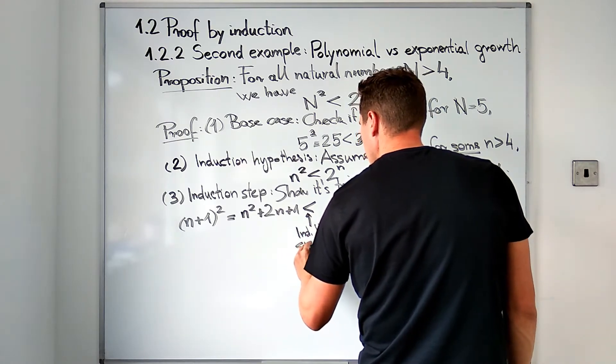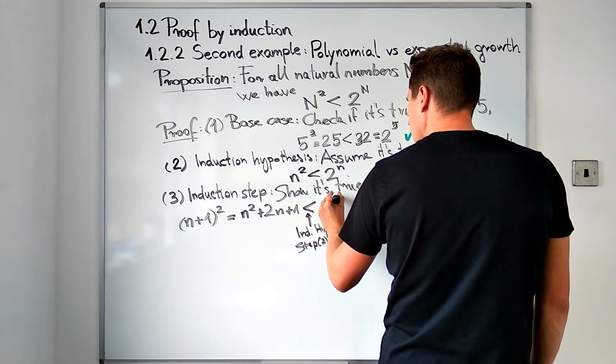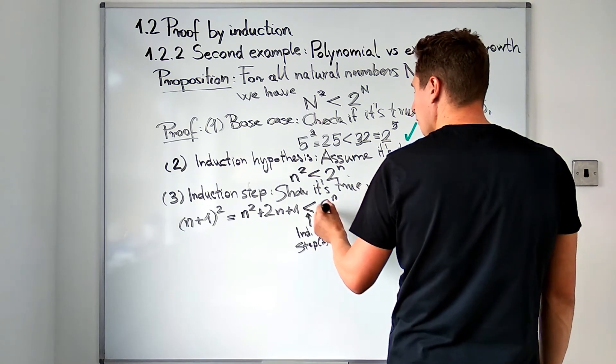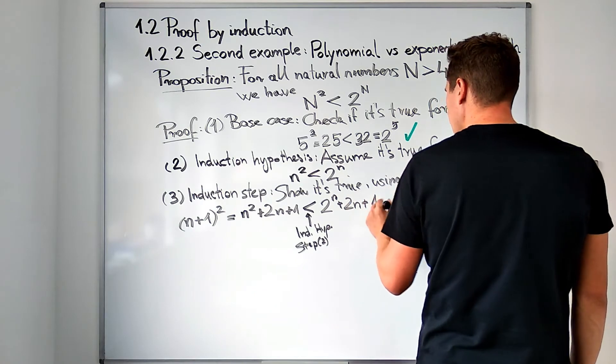So we can use that inequality now. This is the point where we use the induction hypothesis. Step 2 is used at this point to say that this is greater. We get something greater if we have 2 to the power n plus 2n plus 1.